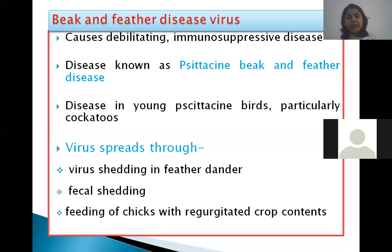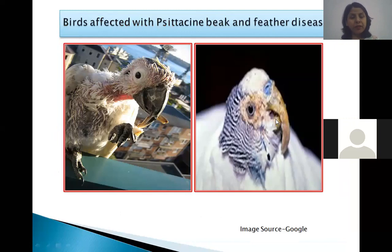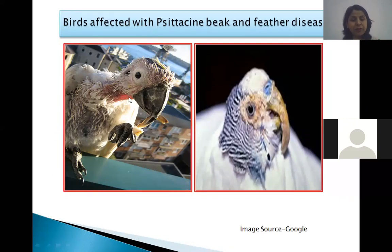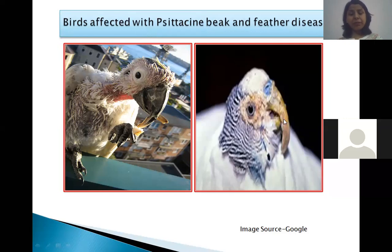Feather dander is a dust of the feather which is similar to dandruff. This picture depicts birds affected with psittacine beak and feather disease virus. In the first picture you can see the loss of feathers and also the deformity of the beak. In the second picture you can see the deformity of the beak — a characteristic symptom of beak and feather disease virus infection.